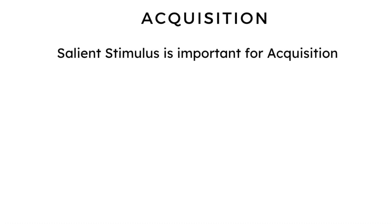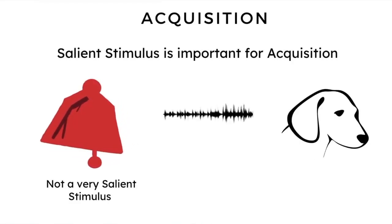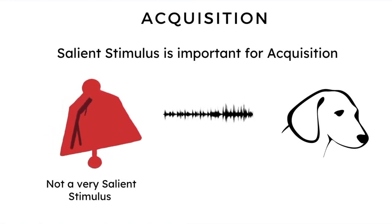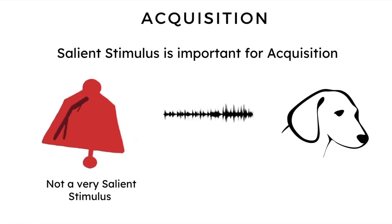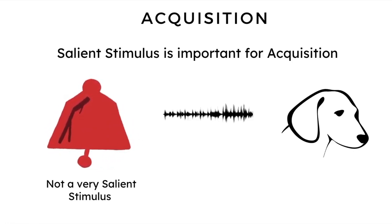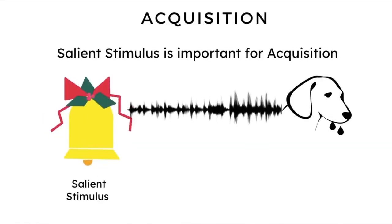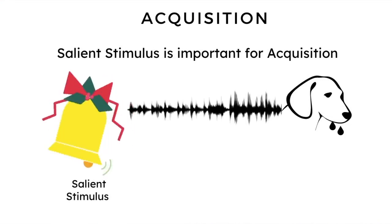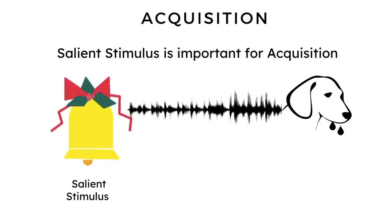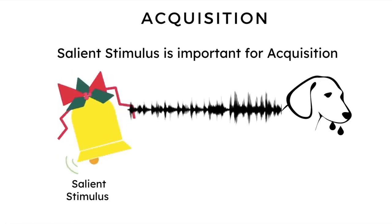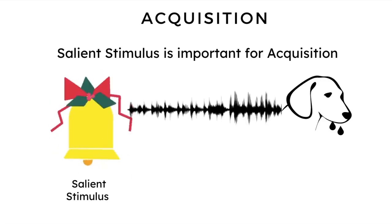Let's first look at stimulus salience. For acquisition to occur successfully, we must use clearly discernible, salient stimuli. For example, if Pavlov used a bell producing very faint sounds, it would be difficult for the dogs to acquire the stimulus-response mapping and conditioning would not occur. Replacing this with a bell that has a discernible sound is more salient, facilitating acquisition of the mapping between the neutral and unconditioned stimulus, and thereby producing a conditioned response.